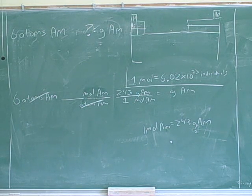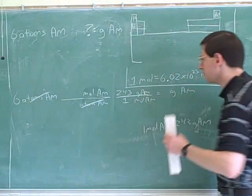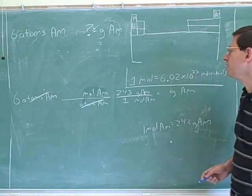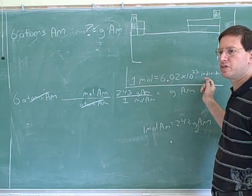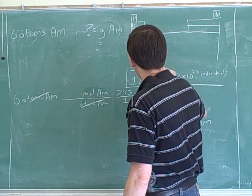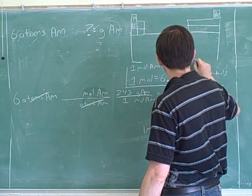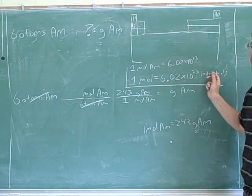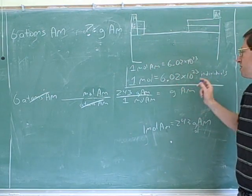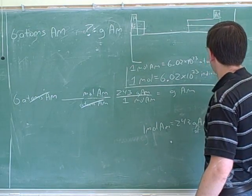23rd. Yeah, Avogadro's number is 6.02 times 10 to the 23rd. Right, so in this case we know that in general one mole is 6.02 times 10 to the 23rd individuals. So what would that mean here? Well that would mean that one mole of americium equals 6.02 times 10 to the 23rd. And what are the individuals here?